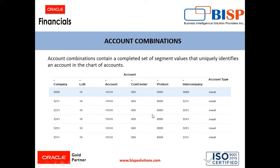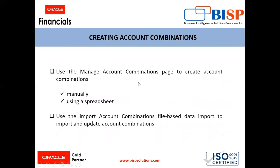If we have enabled the dynamic combination creation by creating the instance, then these combinations are automatically created by the system. But to control what account combinations the company or the enterprise requires, we can use the task Manage Account Combination.